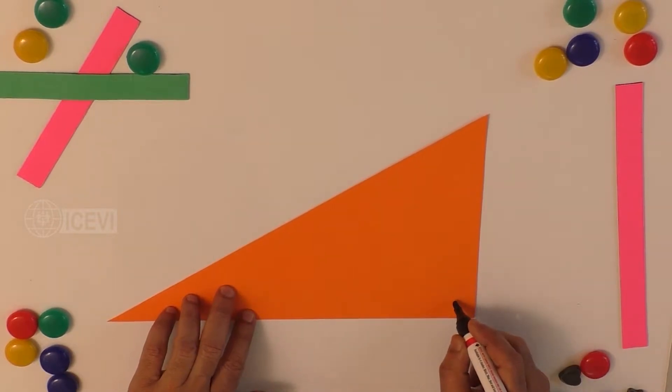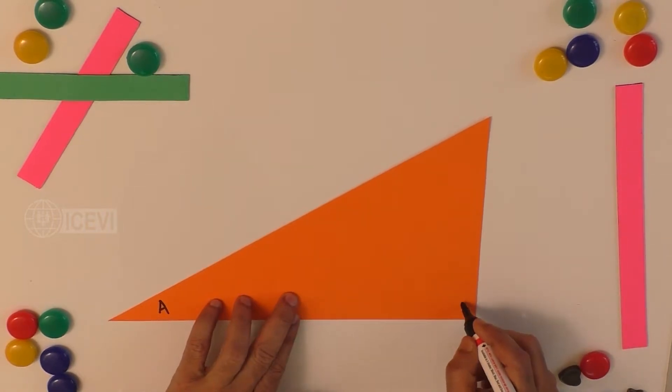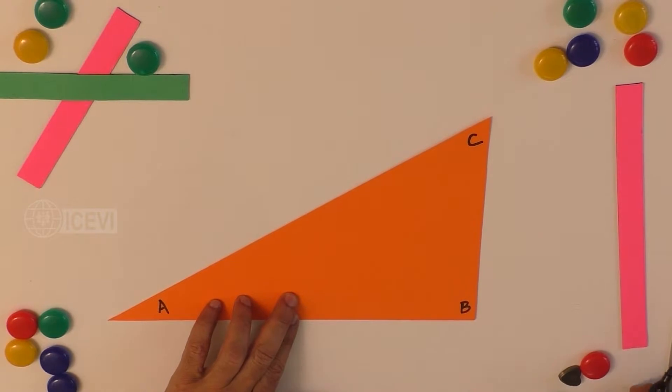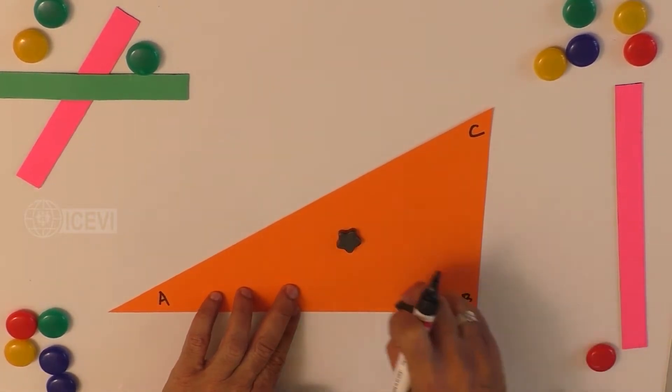So here, let us call that as A, B, and C. Now, one of the angles of the right angle